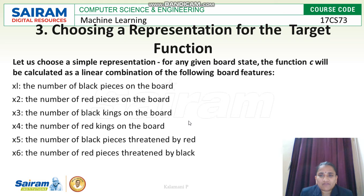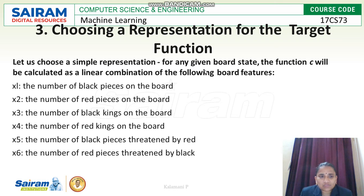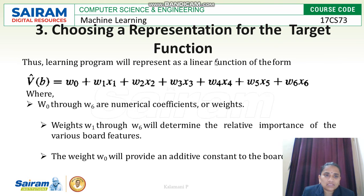Next is choosing the representation for the target function. We calculate a linear combination of the following board features: X1 is the number of black pieces on the board, X2 is the number of red pieces, X3 is the number of black kings, X4 is the number of red kings, X5 is the number of black pieces threatened by red, and X6 is the number of red pieces threatened by black. The linear function is represented as V̂(B) = W₀ + W₁X₁, where W₀ is the initial weight assigned, plus W₁X₁, and so on.